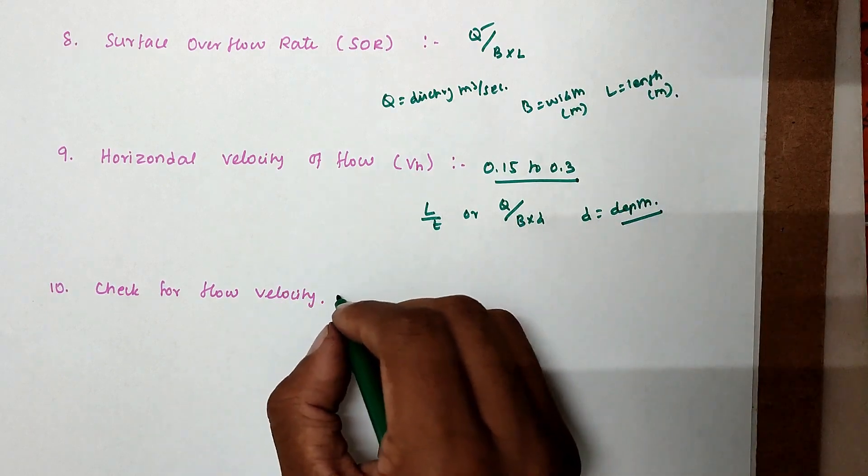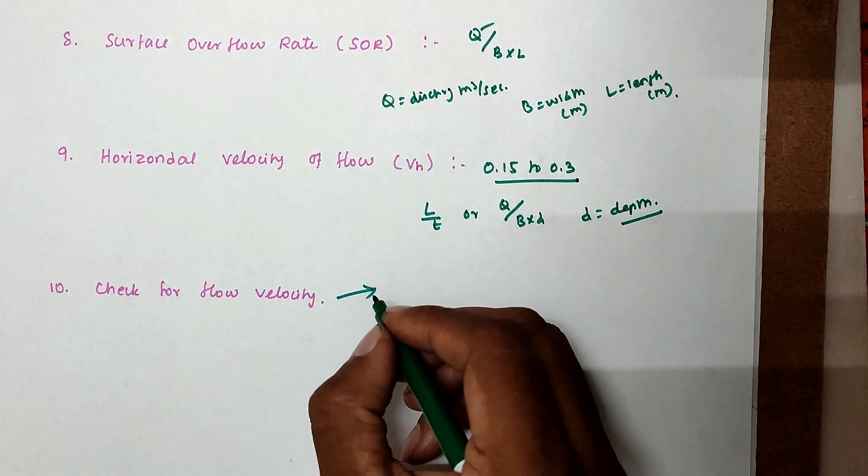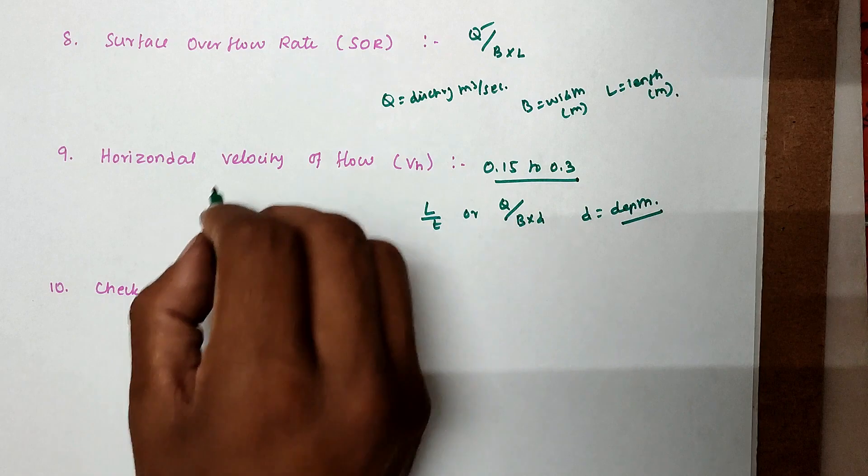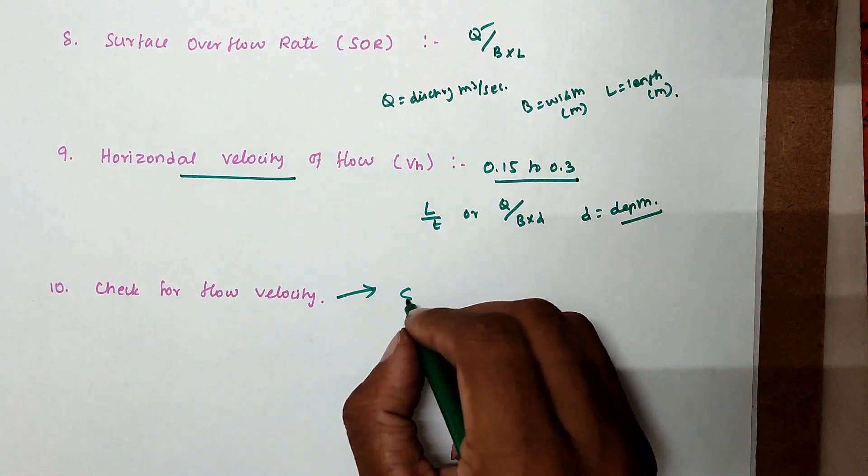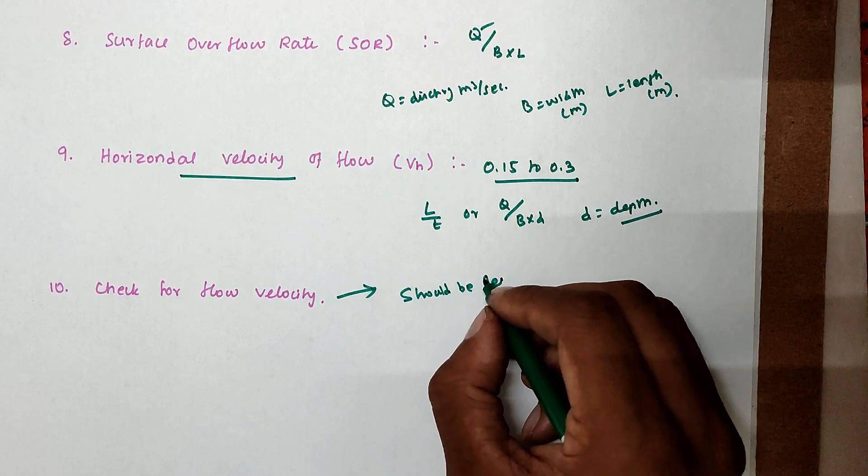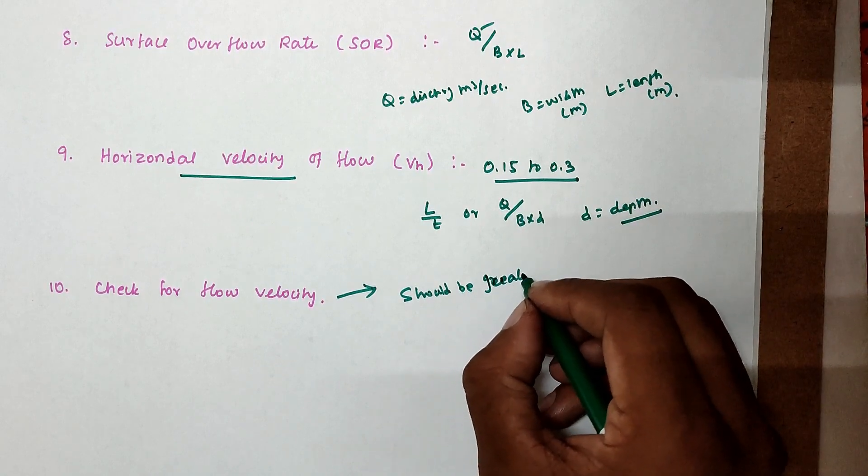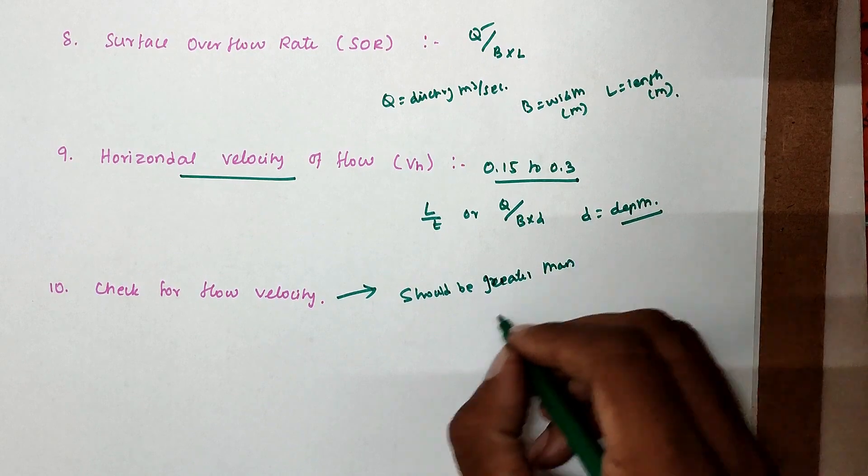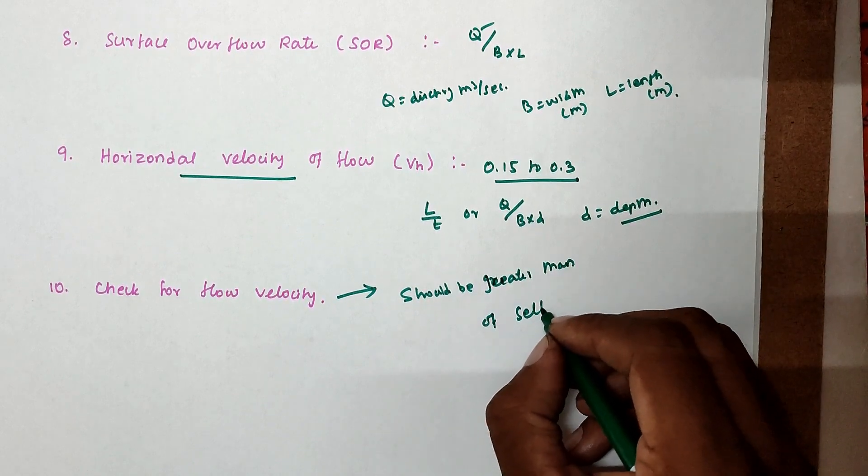Then check for velocity. We have to check the velocity. The horizontal flow velocity should be greater than the self-cleaning velocity.